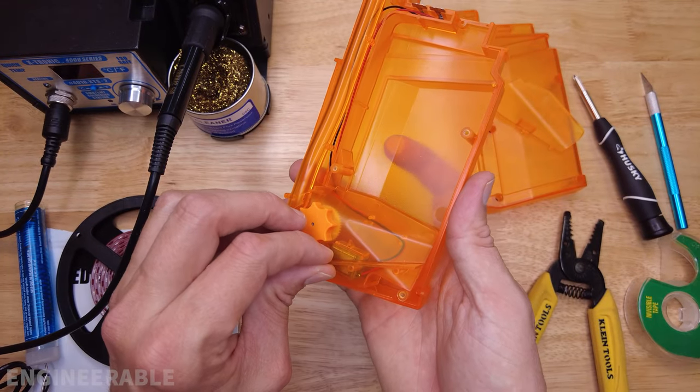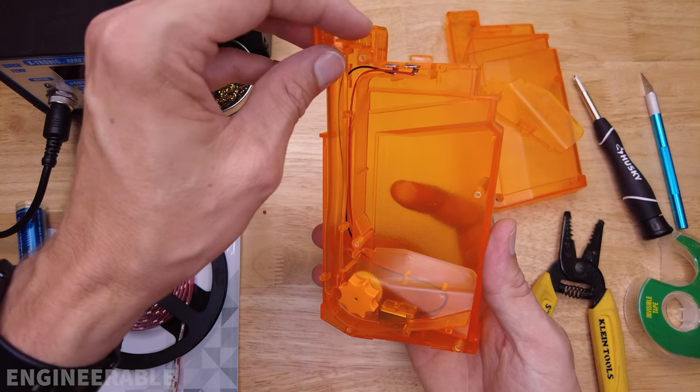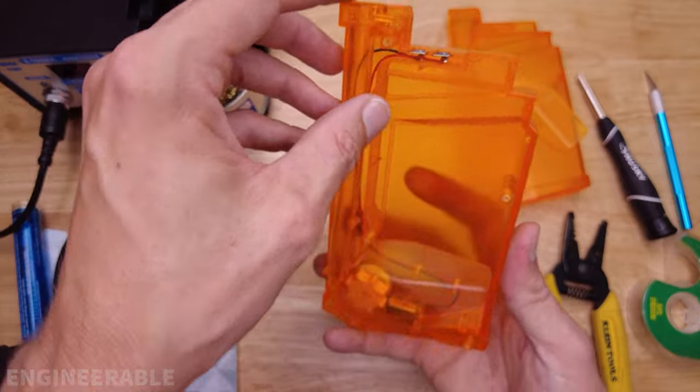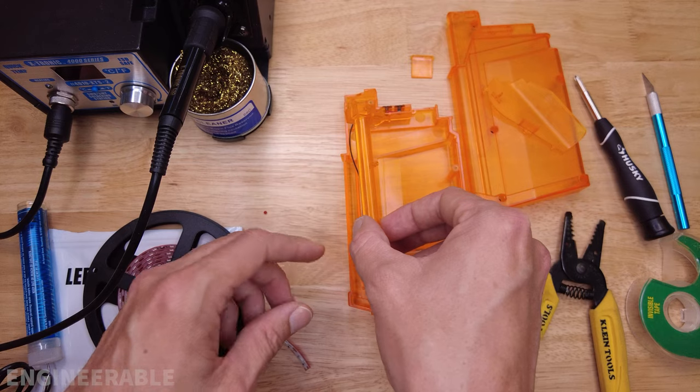Pay attention to how this goes together. This whole assembly here comes out. We're probably going to have to pull it out a little bit. There's a spring inside of here to keep the gel balls in this lever, so be careful. We're going to try not to take this tube apart. We're just going to lift it up so that we can put the UV LEDs behind it.